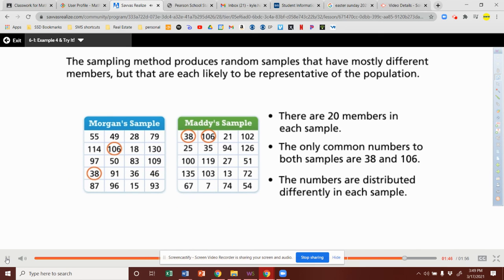We can conclude that the sampling method produces random samples that have mostly different members but that are each likely to be representative of the population.